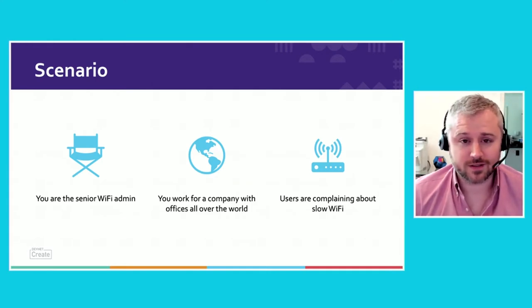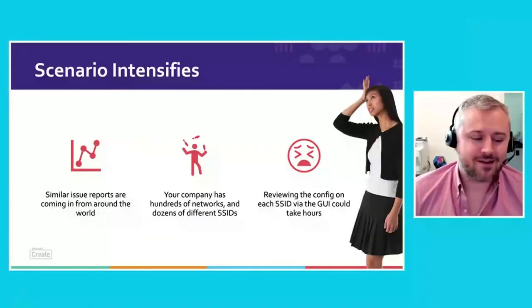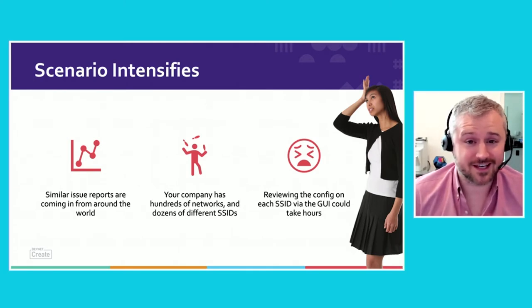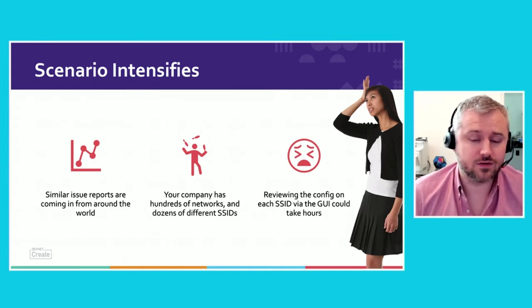After ruling out RF and client-specific issues, a junior engineer reports that they spent all morning checking configurations and found that an SSID bandwidth limit was improperly applied to at least one SSID on at least one network. Luckily, removing the limit fixed the problem. Unfortunately, users at many other locations are also complaining, and your company has hundreds of networks with different SSIDs at many sites. In this session, we will review how a Meraki admin might solve this problem using the dashboard API.